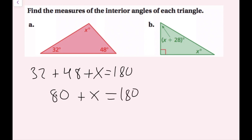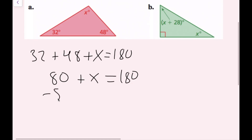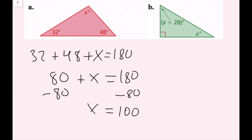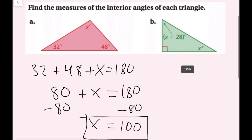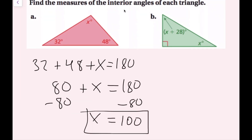To solve for x, I want to get rid of this 80 term. Since it's positive, I'm going to subtract 80 on both sides, and I get x is equal to 100. So the missing angle is 100 degrees. The angles for this triangle are 32, 48, and 100.